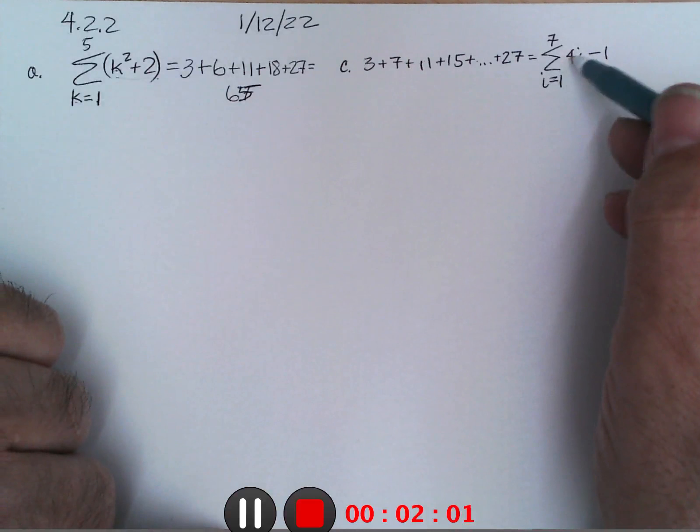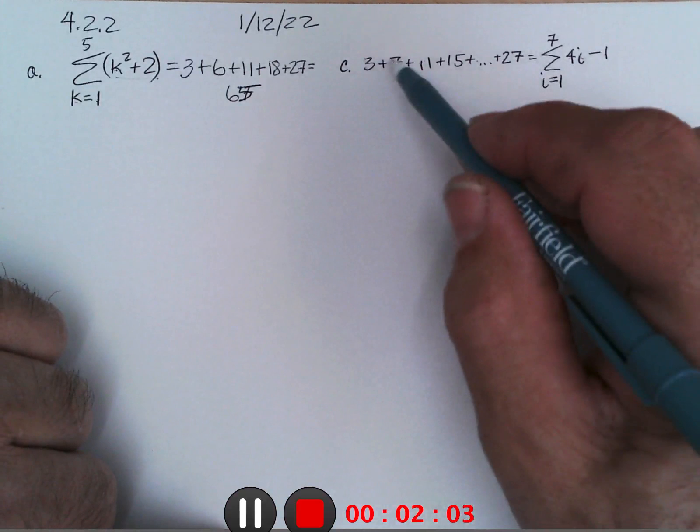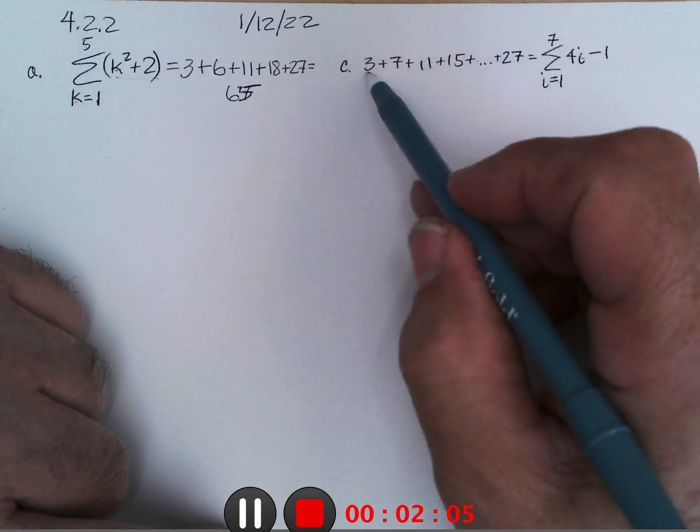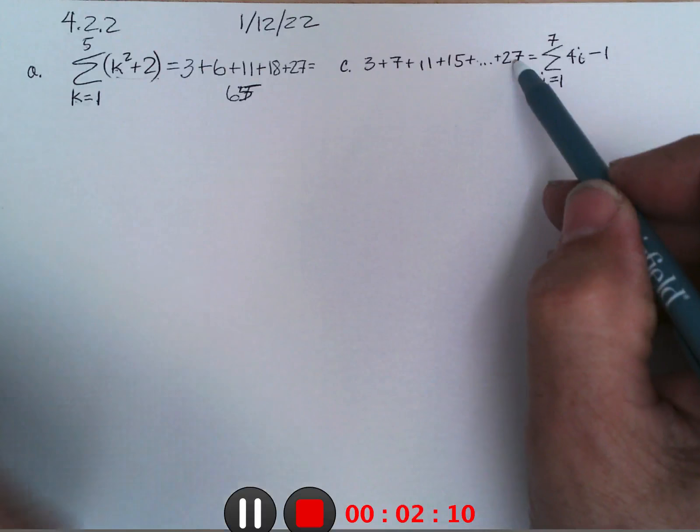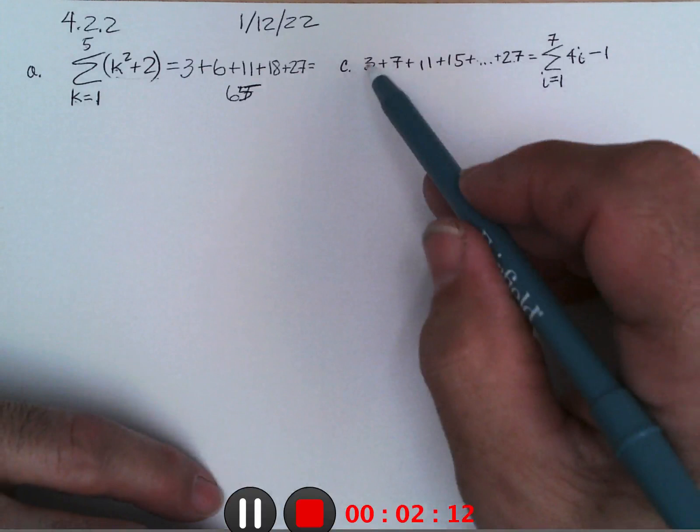If I put in 2, I get 8 minus 1, 7. In fact, if you look at these, these look like multiples of 4: 4, 8, 12, 16 minus 1, and that's what this is doing.